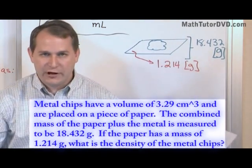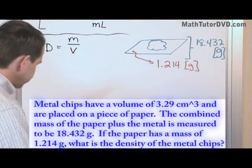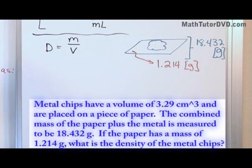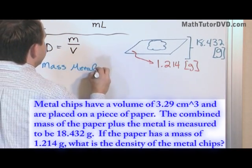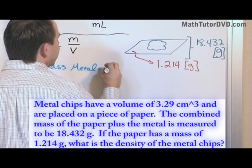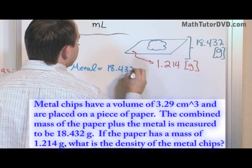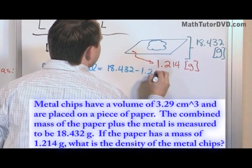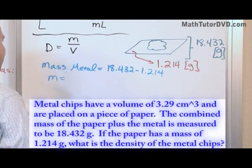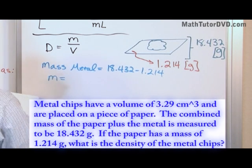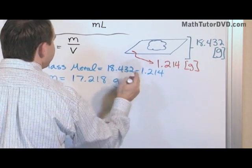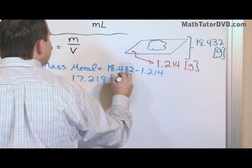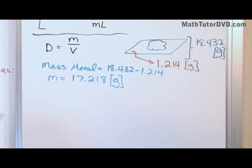We need the mass of the metal chips and the volume of the metal chips. The mass of the metal equals the combined mass of paper and metal — 18.432 — minus 1.214. When you subtract, you get 17.218 grams. That's the mass of the metal chips sitting on top of the paper.